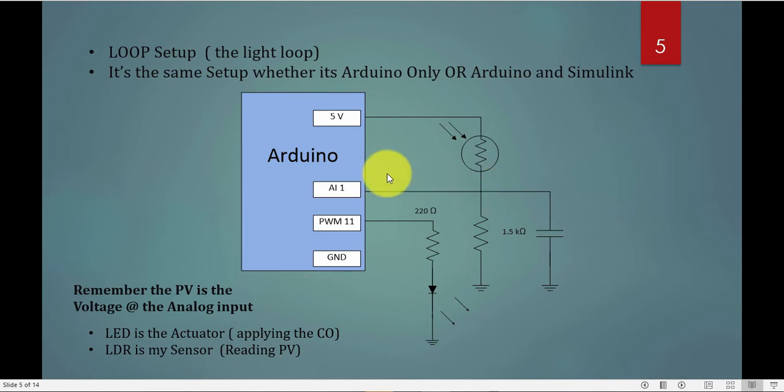Based on the light, the resistance here will change, so the voltage here will change, so I'm getting a different value. You have to remember I'm using the same setup whether it is Arduino only or Arduino plus Simulink. So this is my connection. The LED is my actuator in this case, so I'm controlling it through the pulse width modulation. If you have an analog output in the PLC, this is where I connect it through the analog output.